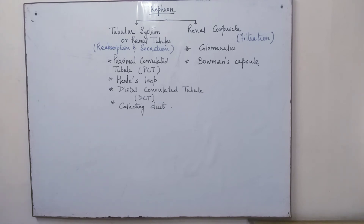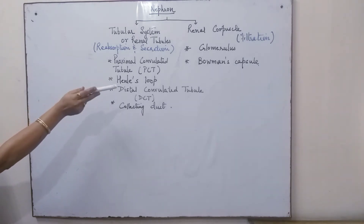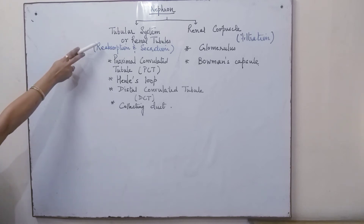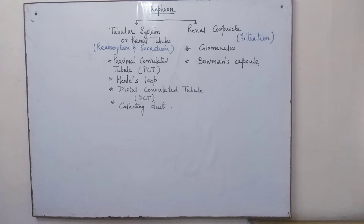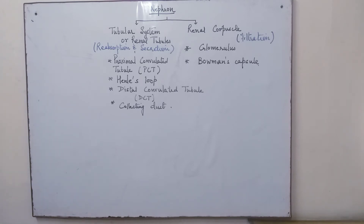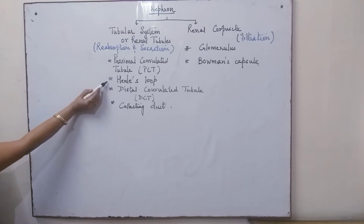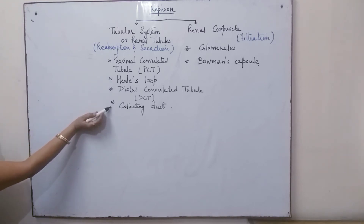The renal corpuscle consists of the glomerulus and the Bowman's capsule, where filtration actually takes place. This leads further to the tubular system or the system of renal tubules, which play a major role in the reabsorption of important metabolites and electrolytes, and secretion also takes place here. The tubular system consists of four major tubules: the proximal convoluted tubule, Henle's loop, followed by the distal convoluted tubule, and the collecting tube.